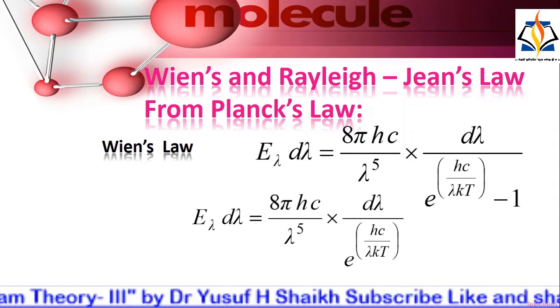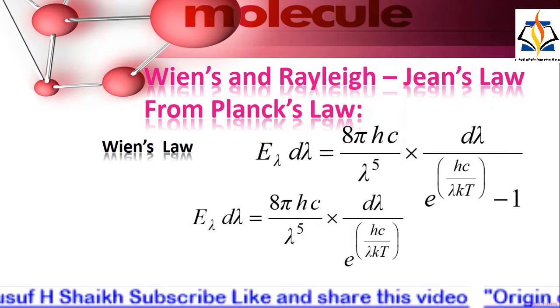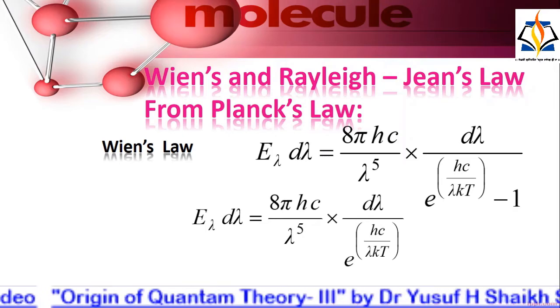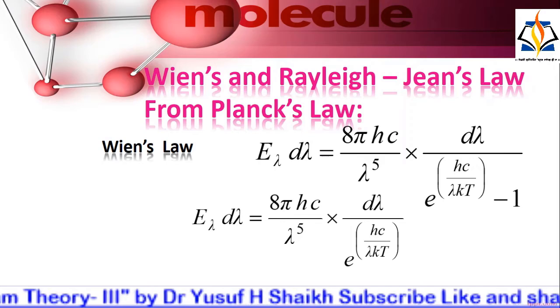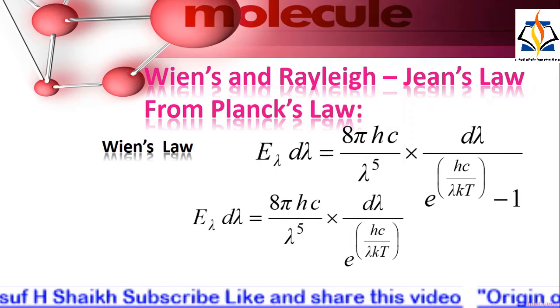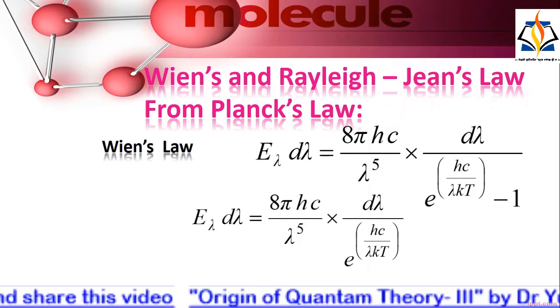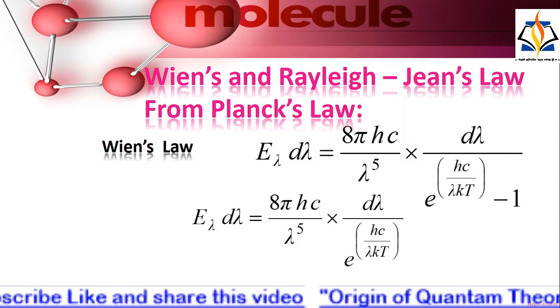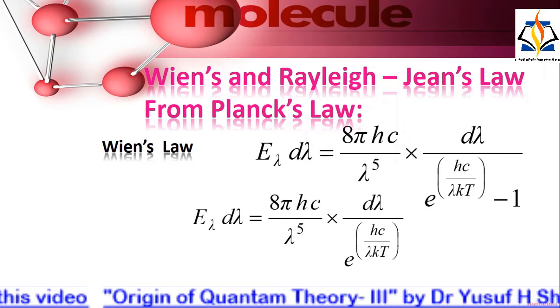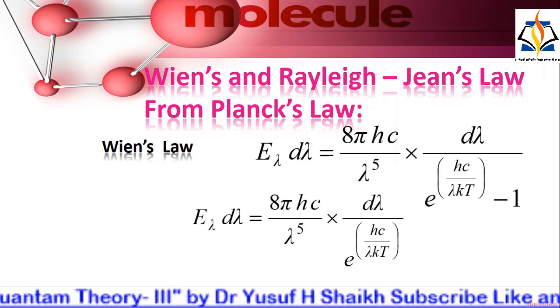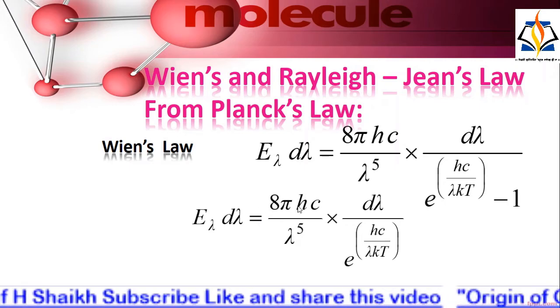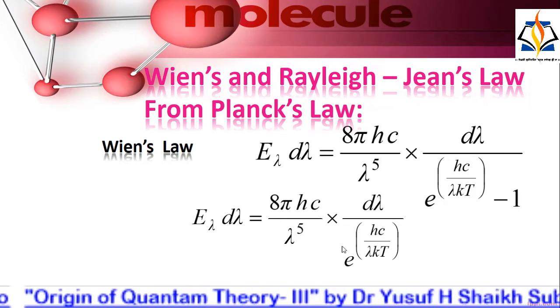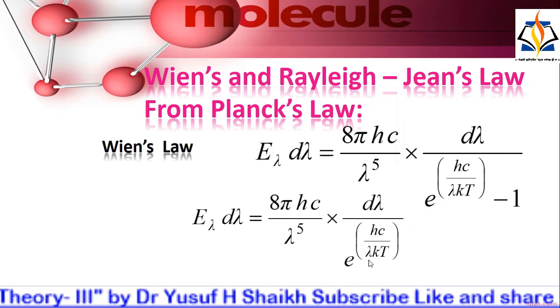Planck's law at lower temperature or low wavelength lambda T is small and hc upon lambda kT is large, so that exponential hc upon lambda kT is greater than 1 and 1 can be neglected in comparison. Hence Planck's equation becomes E lambda d lambda equals 8 pi hc upon lambda raised to 5 multiplied by d lambda upon e raised to hc upon lambda kT.